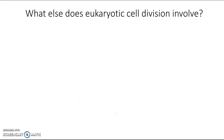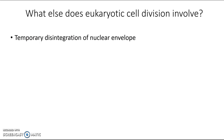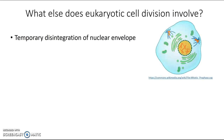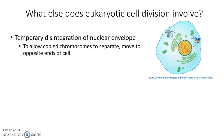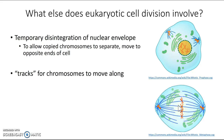What else does eukaryotic cell division involve? Well, if we're going to be able to separate those chromosomes, we need to get them out of the membrane that's around them. So it also involves the temporary disintegration of the nuclear envelope. That nuclear envelope breaks down at the beginning of cell division, allowing the copied chromosomes to separate and move to opposite ends of the cell. And if those chromosomes are going to be moving to opposite ends, they need tracks to move along. When objects need to move inside the cell, they move along microtubules.